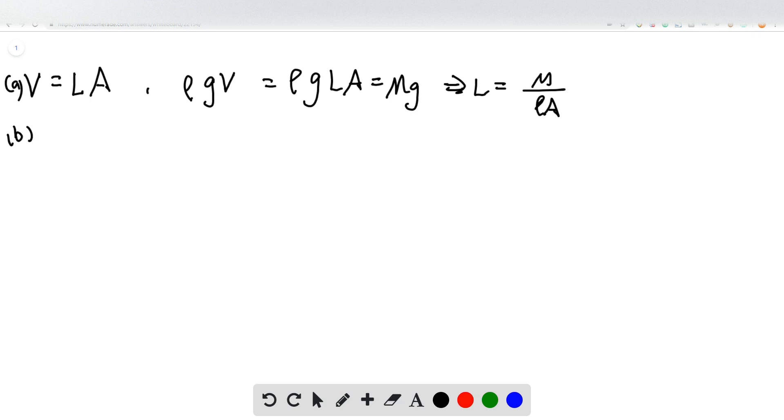So for question B, if you push it down, you have more volume submerged. So suppose you push it down by Y, the new buoyant force is ρG(L+Y), that's the new distance, times the area, and is equal to mg plus F.